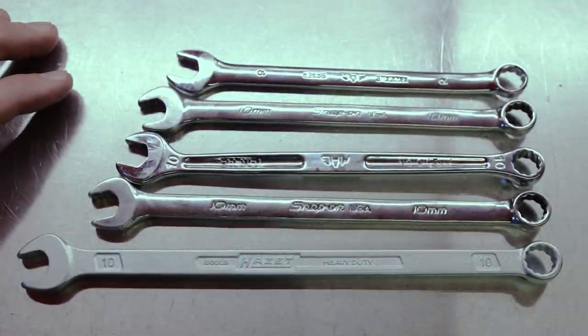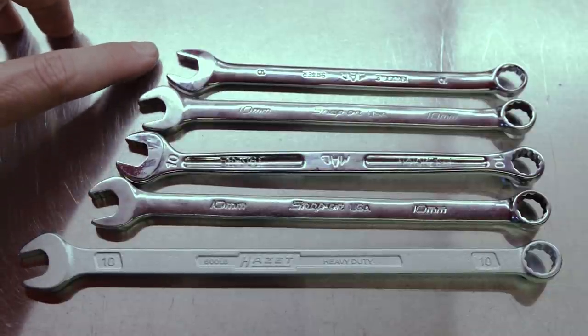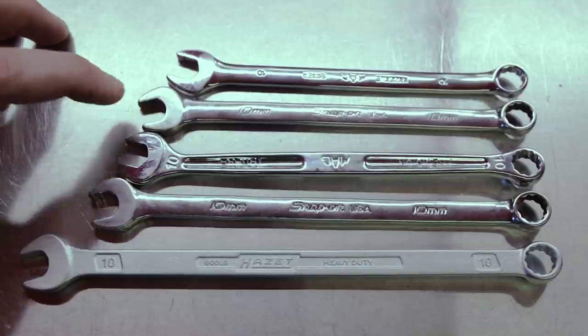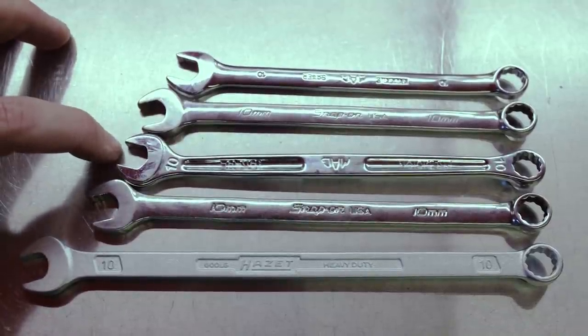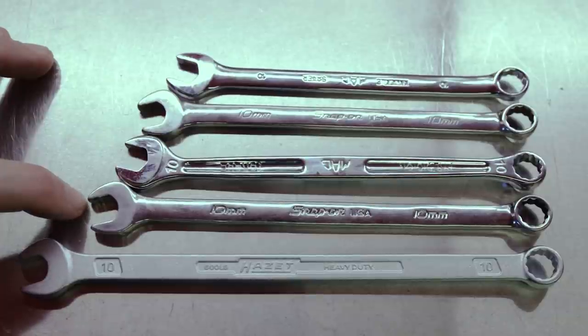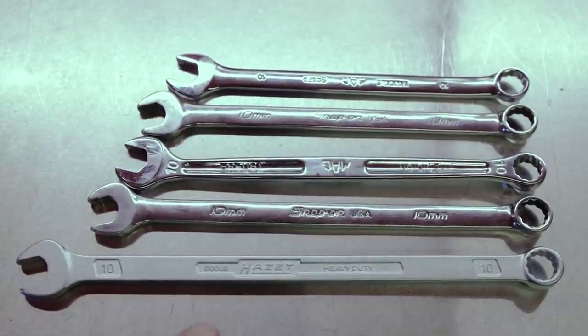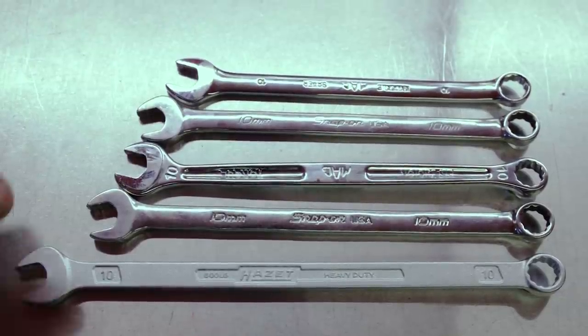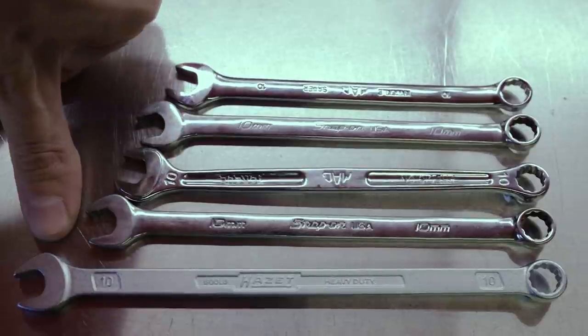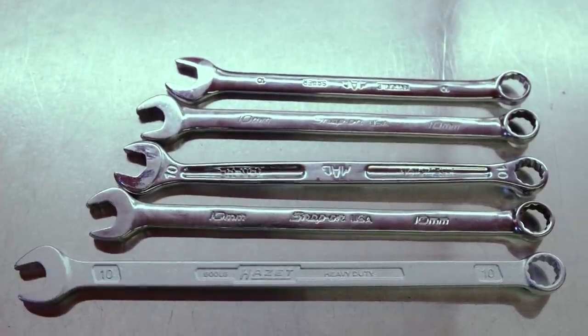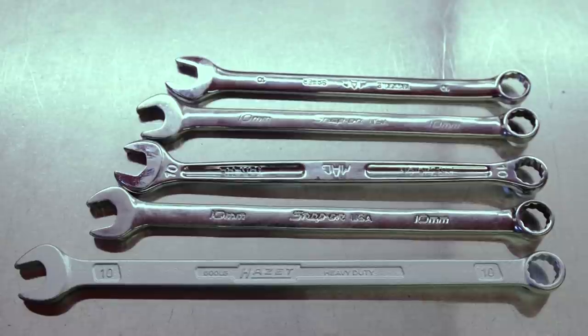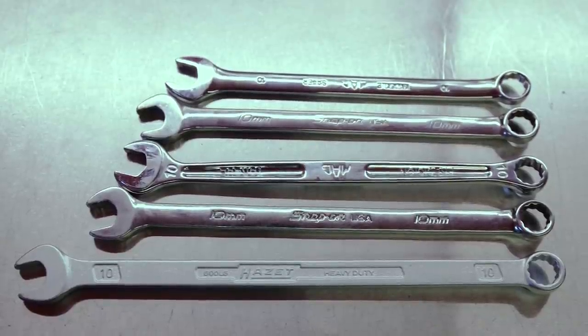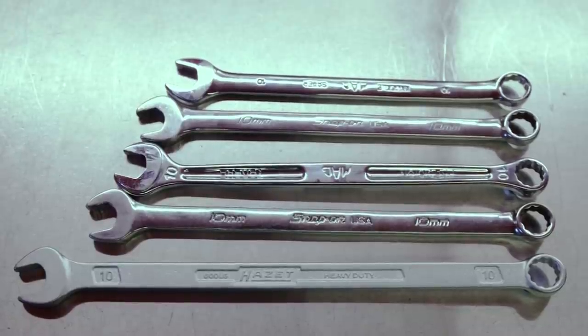All right guys, starting off with the comparison up top, we've got a Mac knuckle saver. We've got a standard length snap on flank drive plus. We've got a Mac precision torque. We've got a snap on flank drive plus XL, and then we've got the Hatzet 600 LG heavy duty at the bottom. It's got a good inch, inch and a half length advantage on all the rest. Don't have a Matco wrench to compare with, just using what I've got handy. Now we'll take a quick look at the 17 mil.